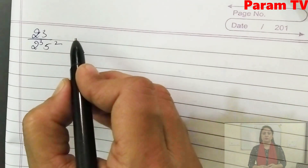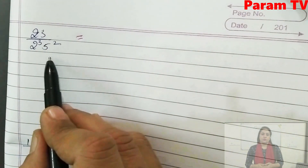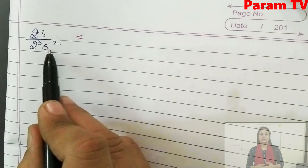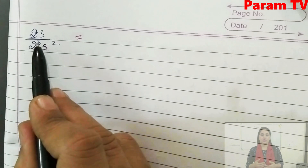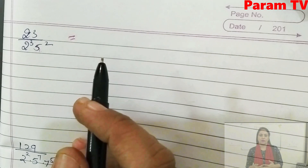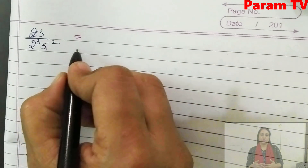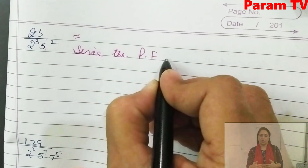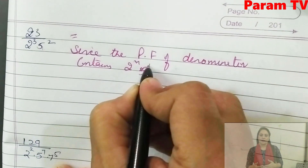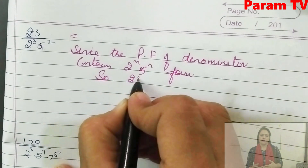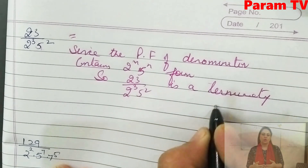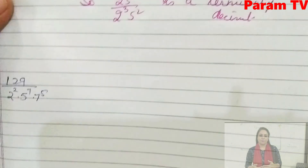Next, you will see — all of you have to do the same. For the next part, you don't need to do prime factorization because the denominator is already in the form 2³ × 5². Since the prime factorization of the denominator contains only 2^m × 5^n form, 23/(2³ × 5²) is a terminating decimal.